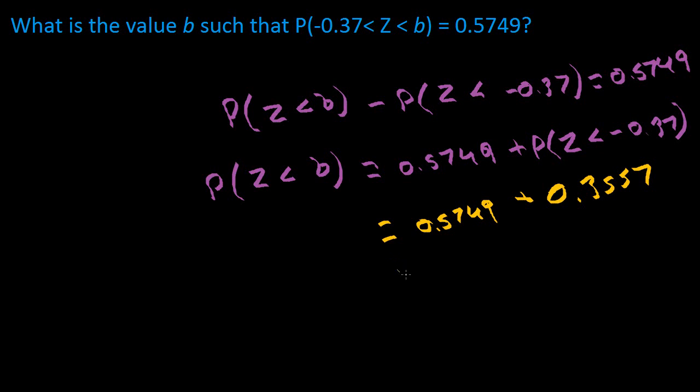So if you added them together you would get 0.9306. So the probability of Z being less than B is going to be equal to 0.9306.